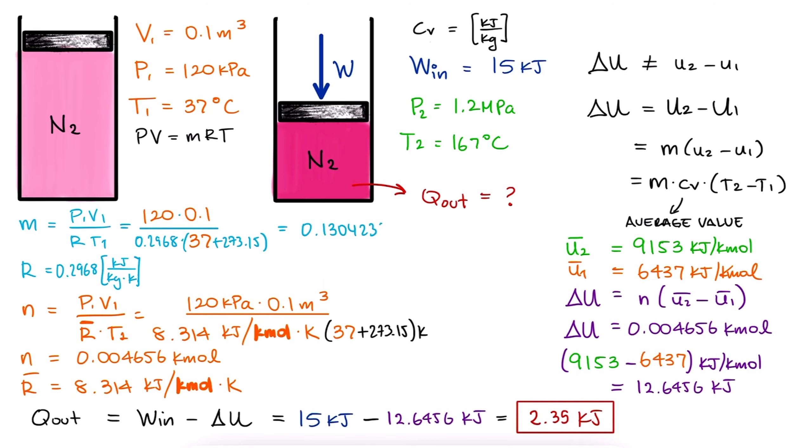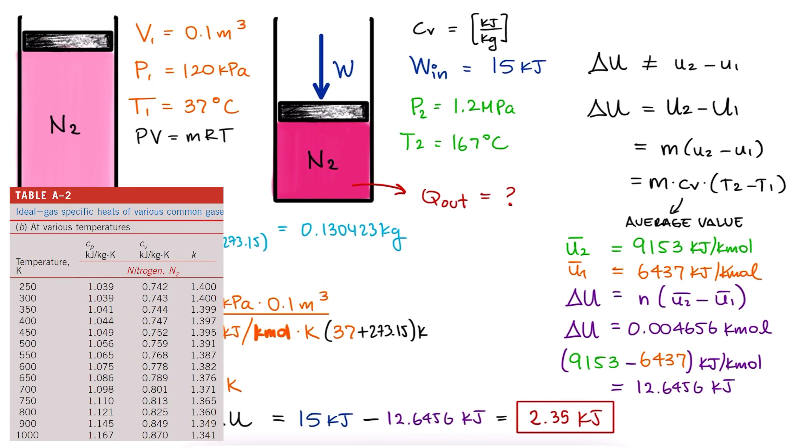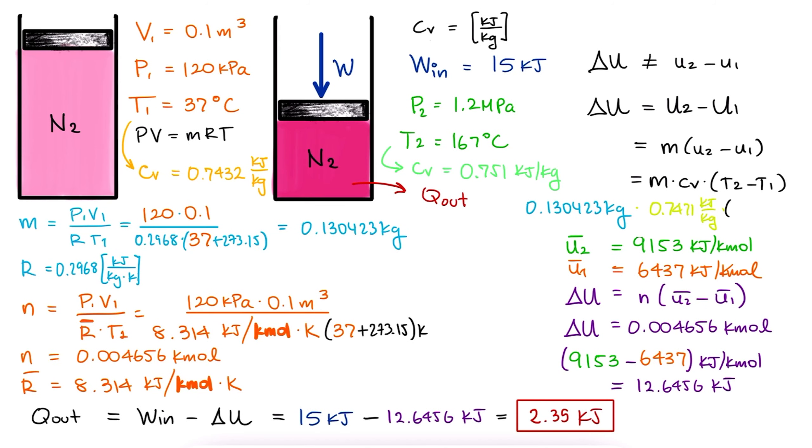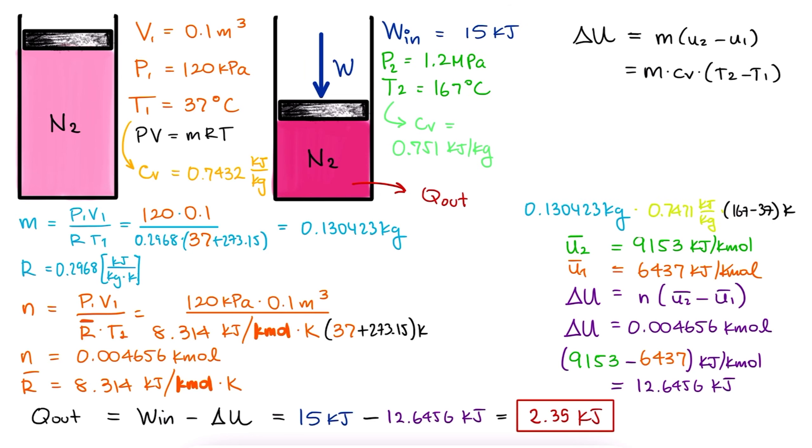With the mass, and assuming we'll use the CV method, all we need to find is CV at 2, interpolating of course, then CV at 1, interpolating again, average them out, and multiply M times the average CV times the difference in temperatures, to find that the change in total internal energy is 12.66 kilojoules.